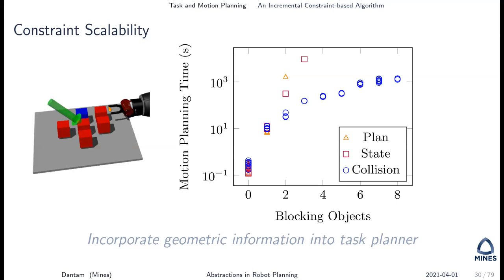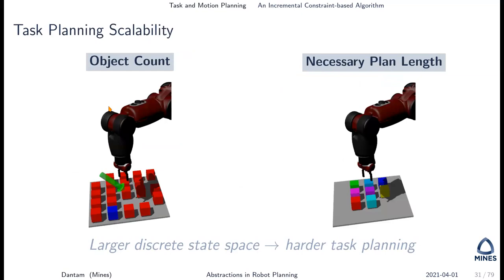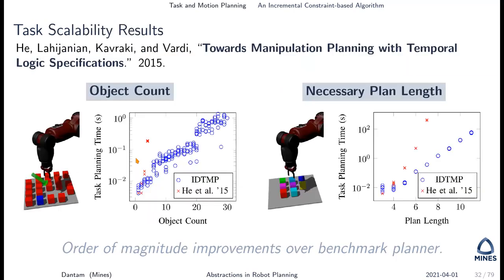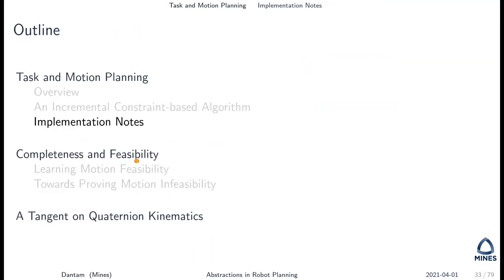We have similar tasks — picking up a blue block or rearranging all blocks — to test scalability of task planning. Comparing to a previous task and motion planner using graph search, we get better scalability from using these constraint solvers.